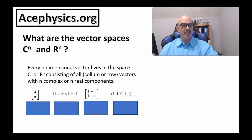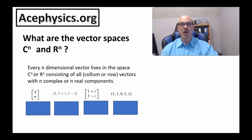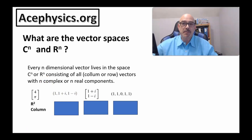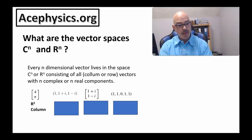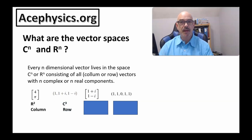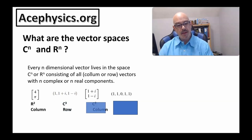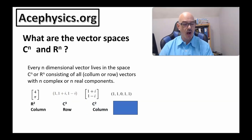Let's start by defining the vector spaces CN and RN. Any n-dimensional vector lives in the space CN or RN, consisting of all column or row vectors with n complex or n real components. For example, the vector (4, π) has two real components, so it lives in space R2 and is a column vector. A vector with at least one complex component and three components lives in C3 and is a row vector. Other examples include a vector in C2 as a column vector, and a vector in R5 as a row vector.